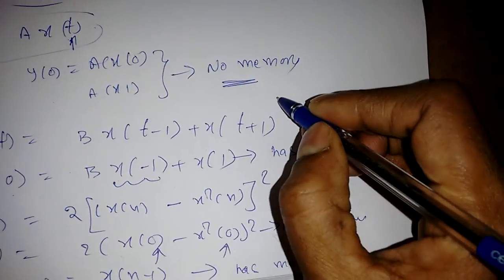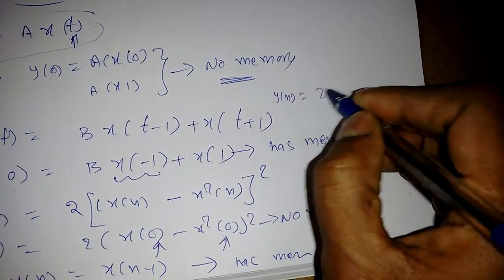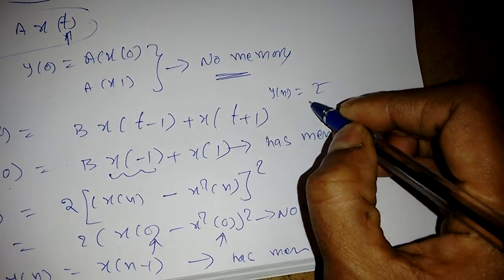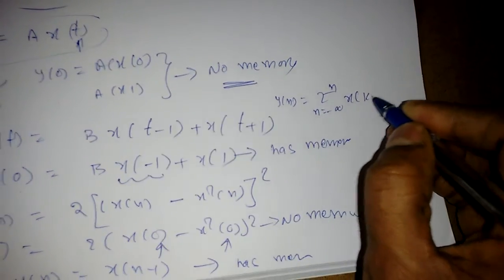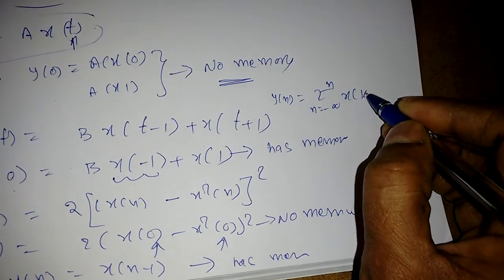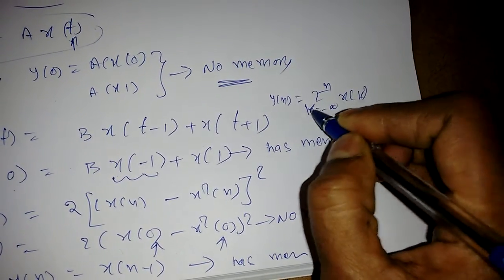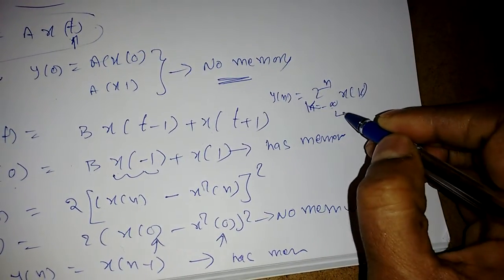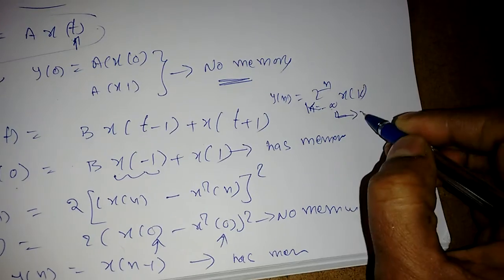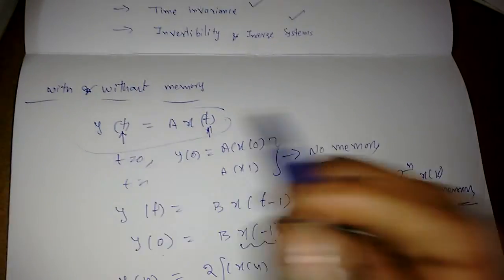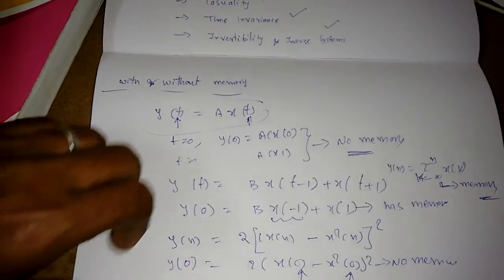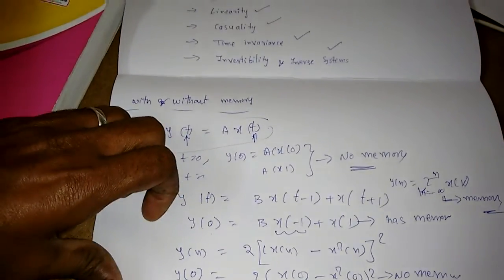One more example: y[n] = Σ (k = -∞ to n) x[k]. This summation depends on all past inputs, so this system also has memory. That covers systems with and without memory. Next we look at linearity.